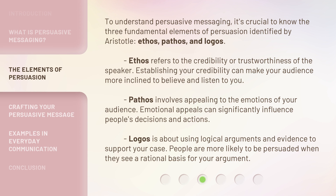Pathos involves appealing to the emotions of your audience. Emotional appeals can significantly influence people's decisions and actions. Logos is about using logical arguments and evidence to support your case. People are more likely to be persuaded when they see a rational basis for your argument.